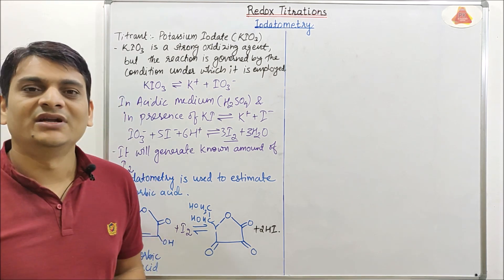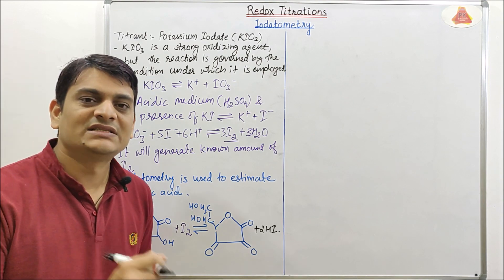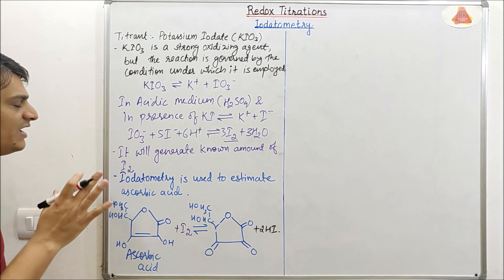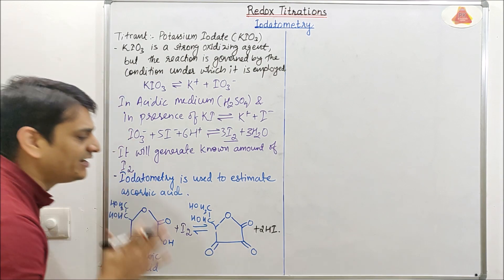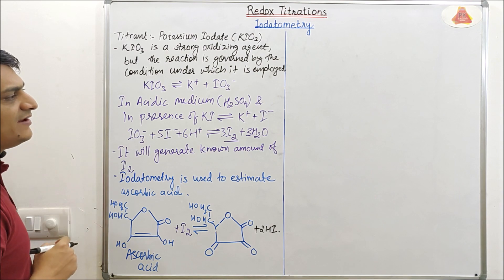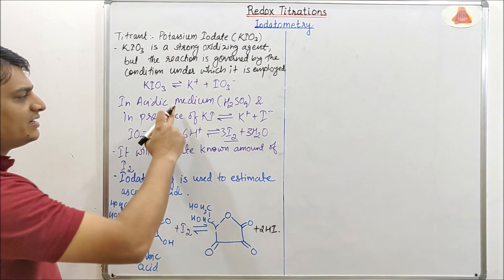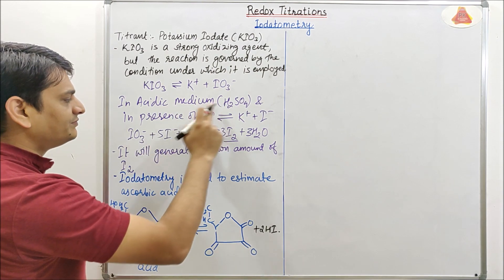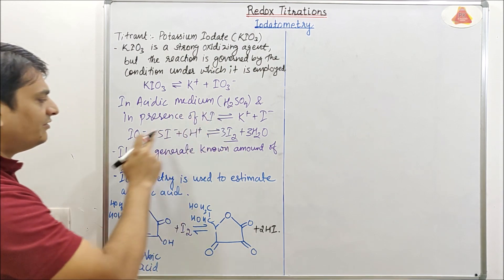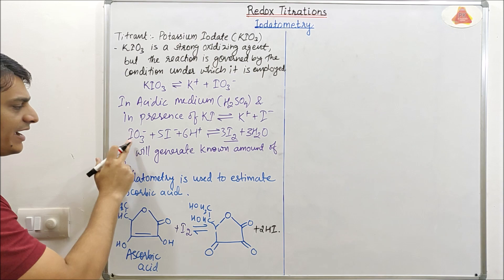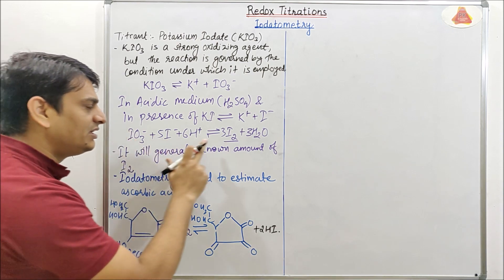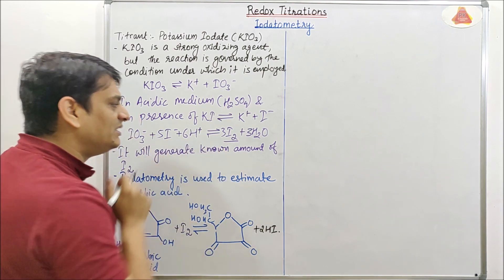Iodatometric titration can be done by two methods: the first is the direct method and the second is the back titration method. In the direct method, we take an acidic medium and KI with KIO3 in an iodine flask, so I2 is liberated.